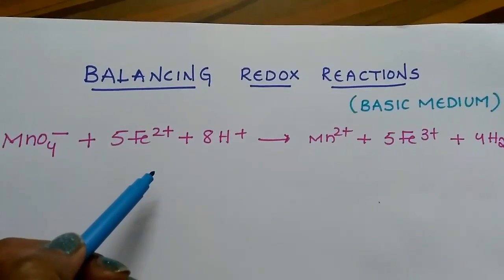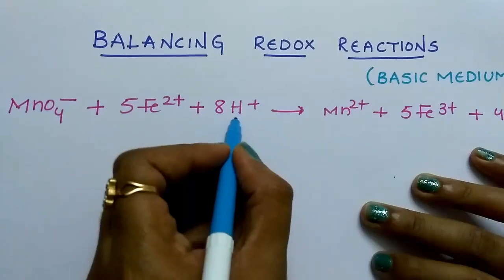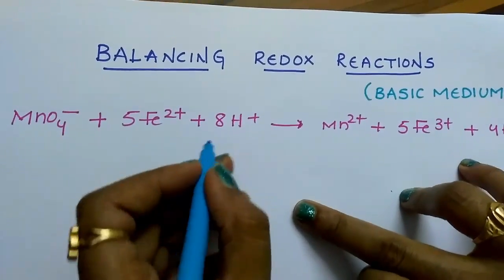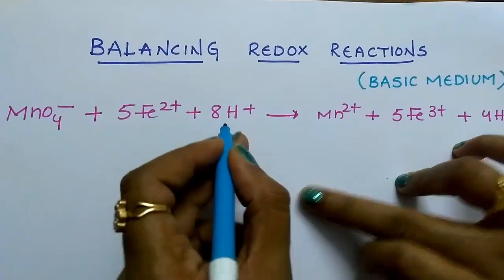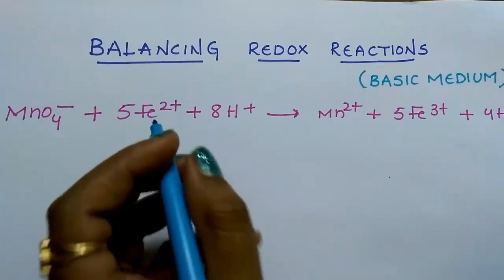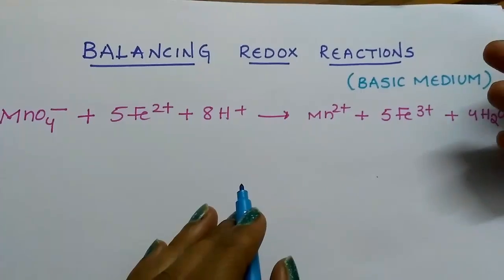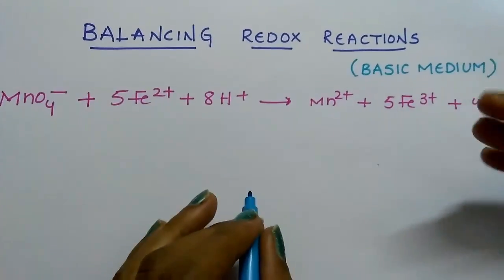Now in basic medium what you have to do is, how many H plus ions are present on the reactant side, add same number of OH minus ions on both the sides of the reaction. See students, this is very simple trick. So many tricks are there but I follow this method.